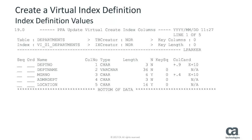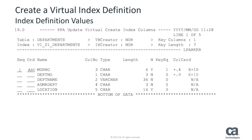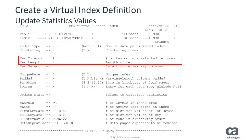The Update Virtual Create Index Columns panel displays. Lynn's existing index used Department Number as the only key column. Lynn decides to use Manager Number as the only key column in her Virtual Index Definition. Lynn selects the Manager Number key column by specifying the number 1 in the Sequence field and pressing Enter. Manager Number is now selected as the key column. Lynn saves her changes by pressing F3 and returns to the Virtual Create Index panel. Lynn looks at the updated values in the Key Columns and Key Length fields, which confirm that her selections were applied. Lynn knows that updating the statistics can help lead to a more accurate analysis.